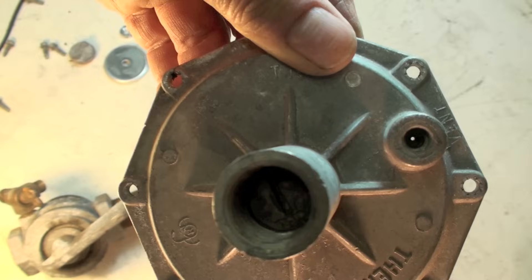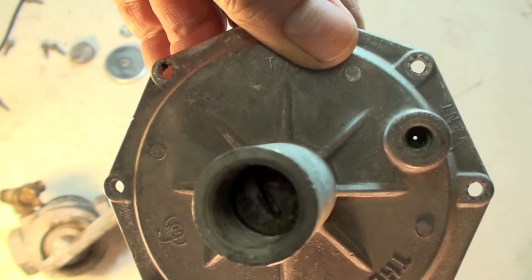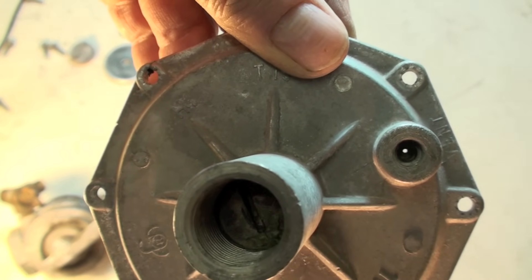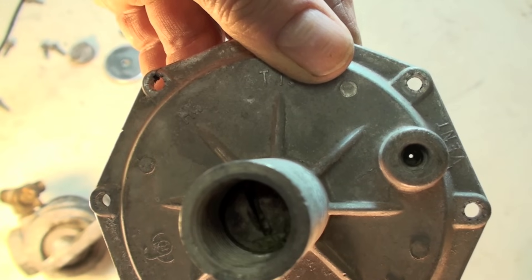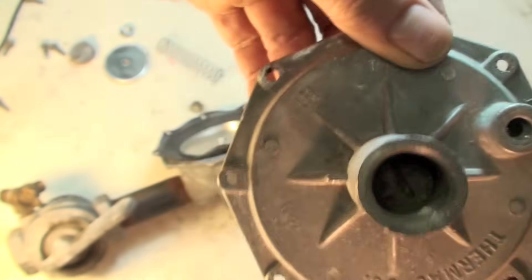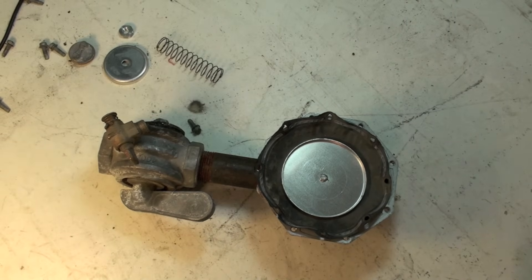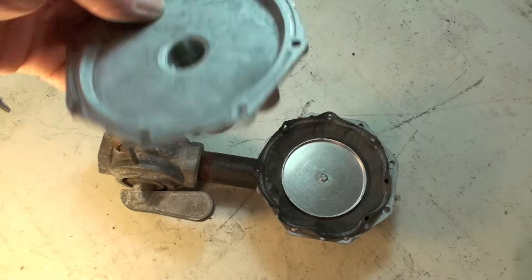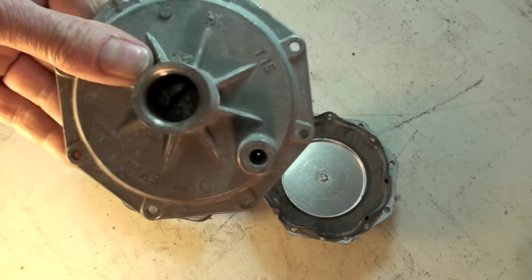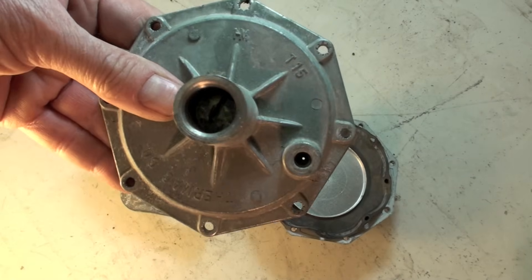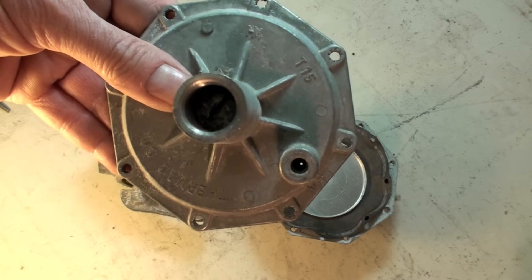If you look real close in there, you can see a hole in that bleeder. Now, that bleeder is very small, a very small hole. Because if this diaphragm here were to burst, they don't want a whole pile of gas going through this bleeder. So, they put the little hole in there. So, it limits the amount of gas that can come through.